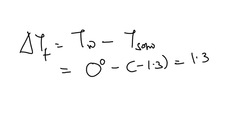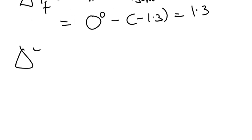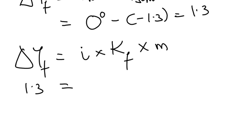Now this ΔTf is equal to i, the van't Hoff factor, times Kf, the freezing point depression constant, times the molality of the solution. So 1.3 equals—since it's a molecular substance, i is one—times the freezing point value for water, which is 1.858.